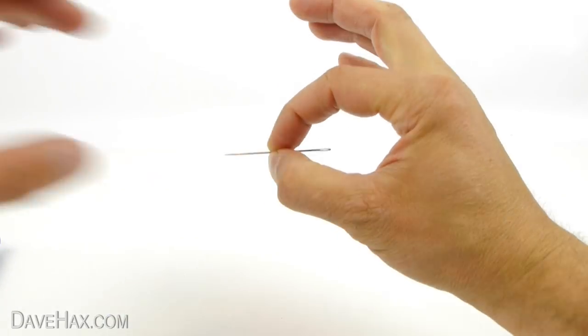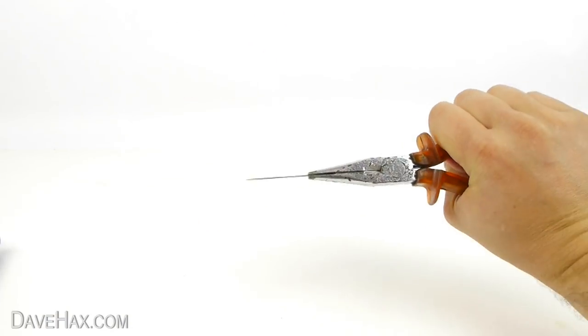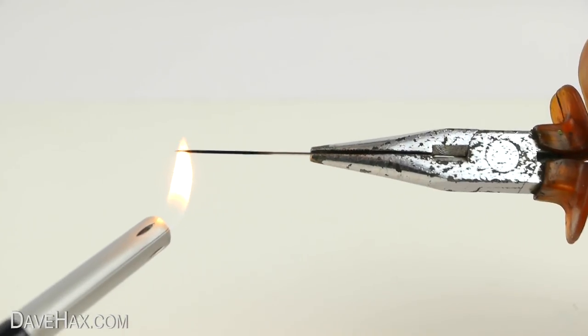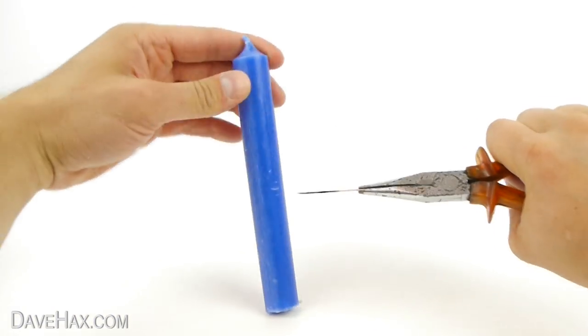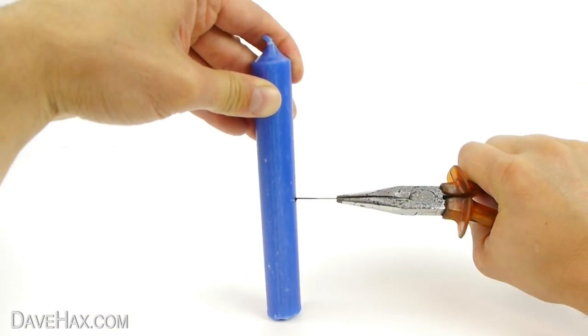Then take a needle, grip it firmly with some pliers and use a lighter to heat it up. Then push it straight through the middle of the candle on the balancing point where we made the mark.